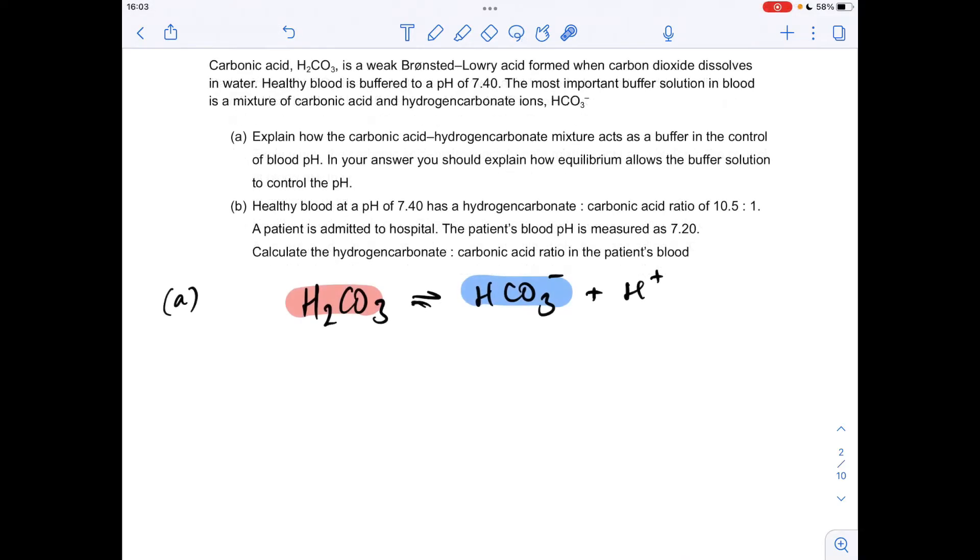We'll go through the answers now. Part (a): How does the carbonic acid hydrogen carbonate mixture act as a buffer? We've got these two species in solution in the blood - a weak acid and the salt ion of a weak acid, the conjugate base of the weak acid.